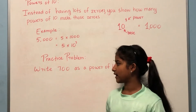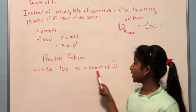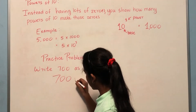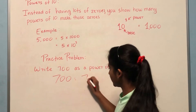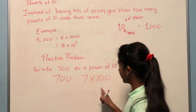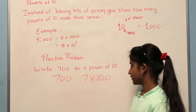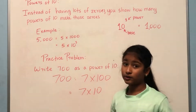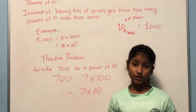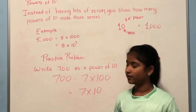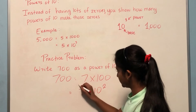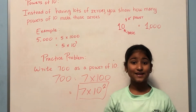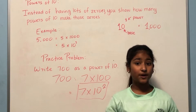Now let's do a practice problem together — write seven hundred as a power of ten. We have to break this up into two parts: seven times a hundred. We can convert this into a power of ten since ten has to be the base, and the power shows how many zeros are in that number. There are two zeros in a hundred, so the power must be two. Seven hundred equals seven times ten to the power of two.